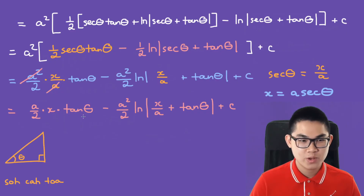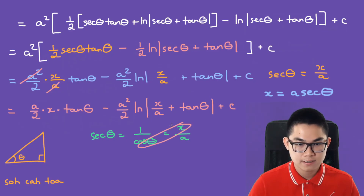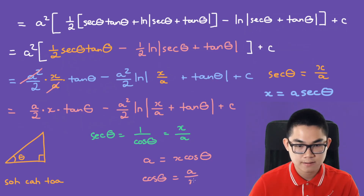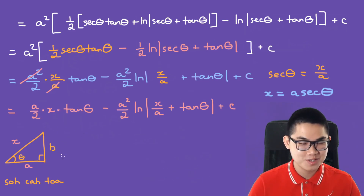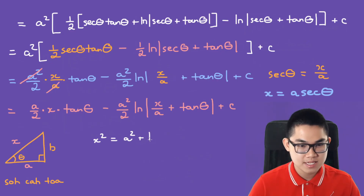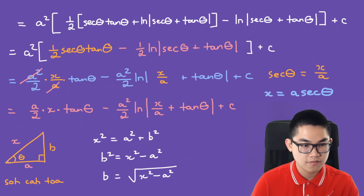We need to figure out what tan is from the secant. Secant equals x over a, and it also equals 1 over cosine, so cosine equals a over x. Since cosine is adjacent over hypotenuse, a is the adjacent side and x is the hypotenuse. Using the Pythagorean theorem, b squared equals x squared minus a squared, so b equals the square root of x squared minus a squared — always positive as a side length.